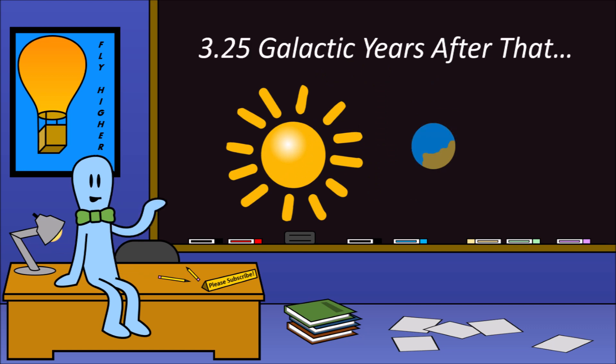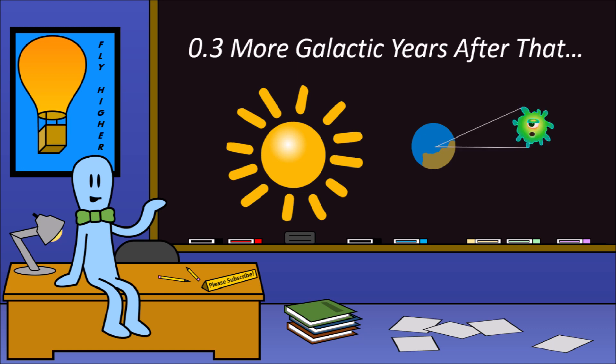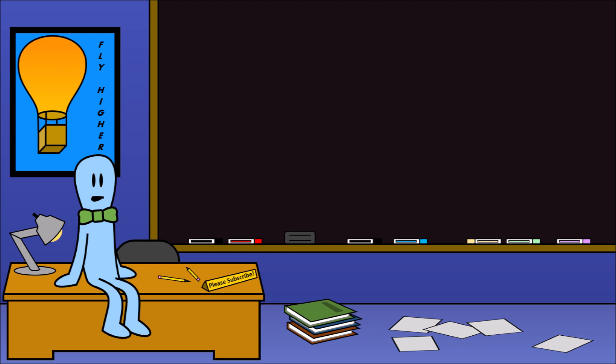3.25 galactic years after that for the oceans to form, and an additional 0.3 galactic years for the first life to show up in the ocean. But then things slowed down. A lot.